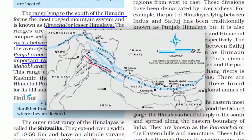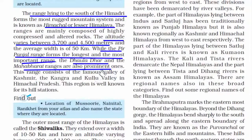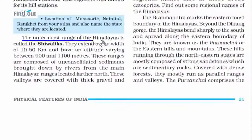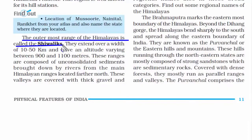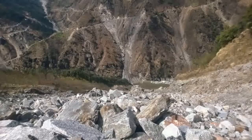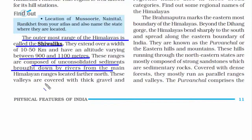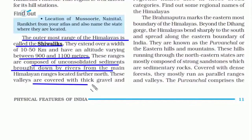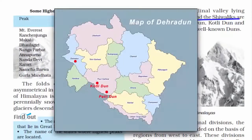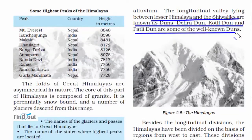The Pir Panjal is one of the longest and most important ranges in the Lesser Himalayas, followed by the Dhauladhar and Mahabharat ranges. Famous valleys here include the Kashmir, Kangra, and Kullu valleys, and this region is well known for its hill stations. The third and outermost range is called the Shivalik, with a width of 10 to 50 kilometers and peak heights of 900 to 1,100 meters. This range consists mostly of sedimentary rocks brought down by rivers from the main Himalayas, and is also rich in alluvium soil. Famous duns like Dehra Dun, Kotli Dun, and Patli Dun are found here.